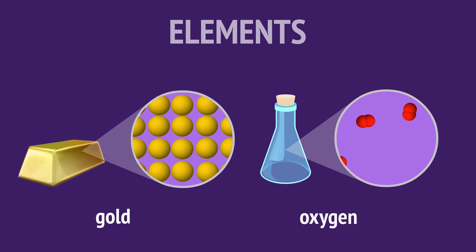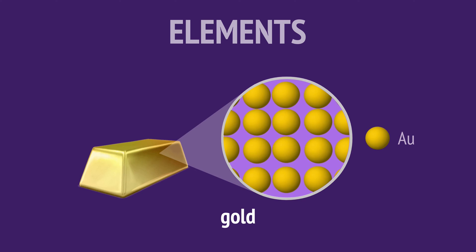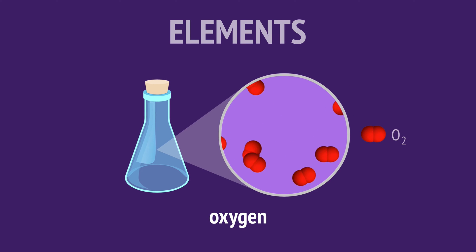All elements are pure substances because they only have one type of atom. The element gold has only gold atoms, and the element oxygen has only oxygen atoms bonded as diatomic molecules.